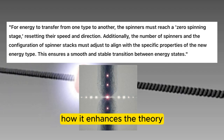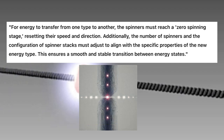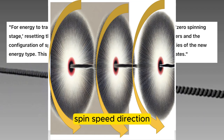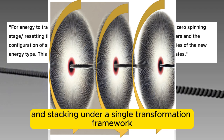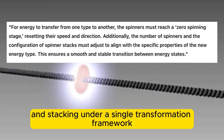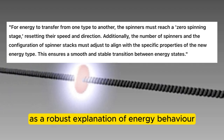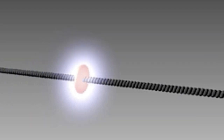How it enhances the theory. This revision unifies the key properties of energy — spin, speed, direction, spinner count, and stacking — under a single transformation framework, reinforcing the threads and spin-ins theory as a robust explanation of energy behavior.